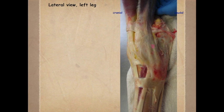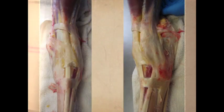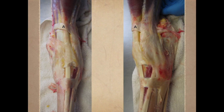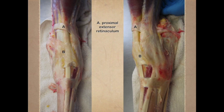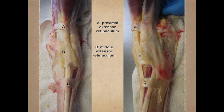Here is the short digital extensor muscle — its tendon basically just blends into the long digital extensor muscle. Looking at the retinaculi: we start with the proximal extensor retinaculum at the distal end of the tibia, which binds down the tendon of the cranial tibial muscle, peroneus tertius, and the long digital extensor tendon. In the middle of the tarsus, we find the middle extensor retinaculum, which forms a ring around the long digital extensor tendon and attaches to the calcaneus and the lateral tendon of the peroneus tertius. Finally, the distal extensor retinaculum at the proximal end of the cannon bone binds down the tendons of the lateral and the long digital extensor.